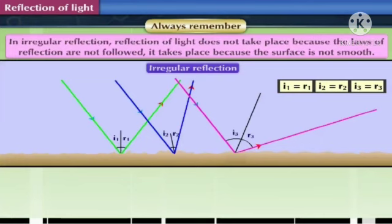Second point: in irregular reflection, reflection of light takes place not because the laws of reflection are not followed, but because the surface is not smooth.